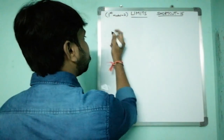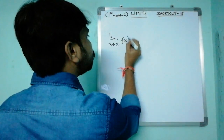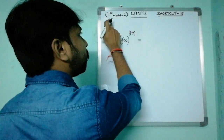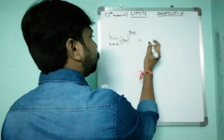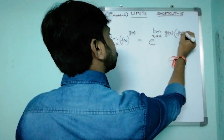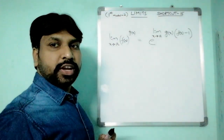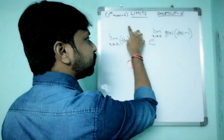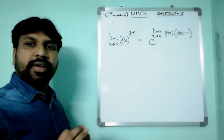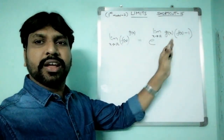The formation is: limit x tends to a of f(x) whole to the power of g(x). If it is of the form 1^∞, you can apply e^[limit x tends to a of g(x) into (f(x) − 1)]. So limit x tends to a of f(x)^g(x) can be rewritten as e raised to the power of limit x tends to a of g(x) into (f(x) − 1). If you know this secret, you can crack any kind of question.